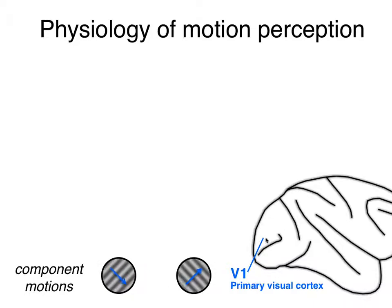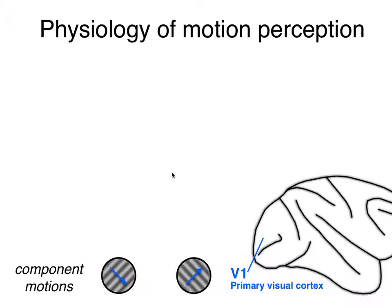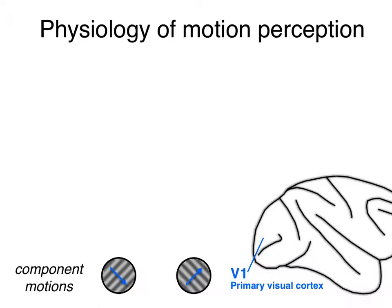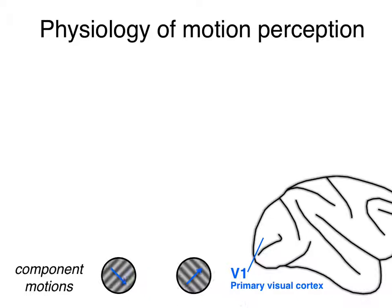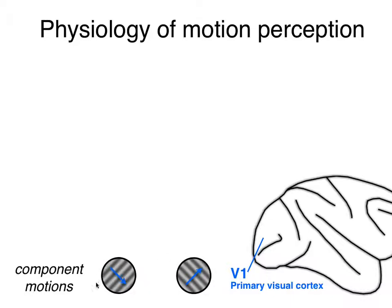There is a cascade of processing that happens in the brain. This is the back of the brain, looking at primary visual cortex. That cascade starts at the processing of what's called component motion signals in primary visual cortex, or area V1. Area V1 contains neurons that are sensitive to particular orientations and to the direction of motion that is perpendicular to that orientation. So there will be cells in V1 that are sensitive to one kind of stimulus, and other cells in V1 sensitive to another kind of stimulus.